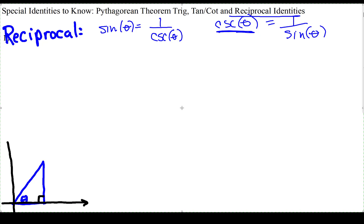That's one of the reciprocals. Now we have cosine theta is equal to 1 over secant. Cosecant, ah, secant is equal to 1 over cosine theta.